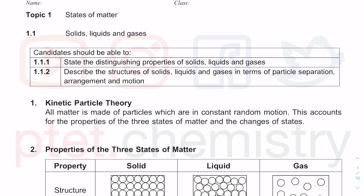In this topic on states of matter, it kicks off talking about the three different states of matter: solids, liquids, and gases. These are the learning objectives as stated by Cambridge, and also very common to any curriculum standards around the world. Candidates should be able to state the distinguishing properties — meaning you need to tell apart the differences between solid, liquid, and gases at the molecular level, not just how they look from the outside, but in terms of their chemistry at the particle level.